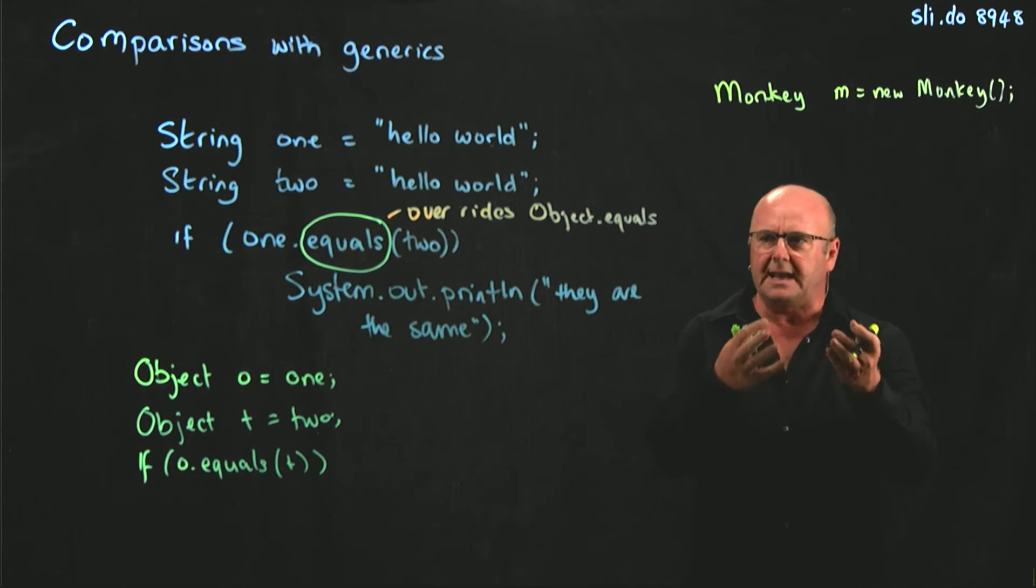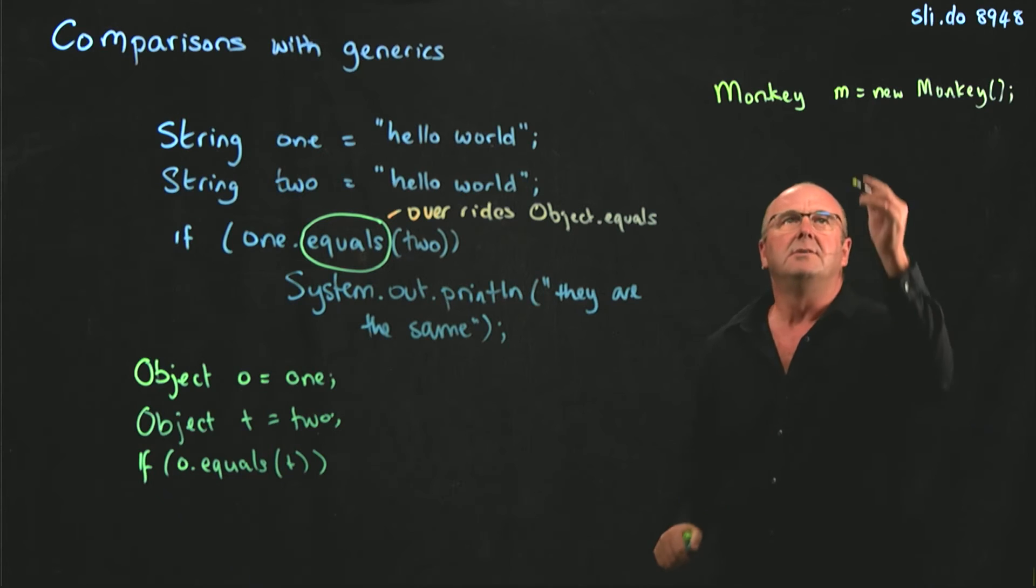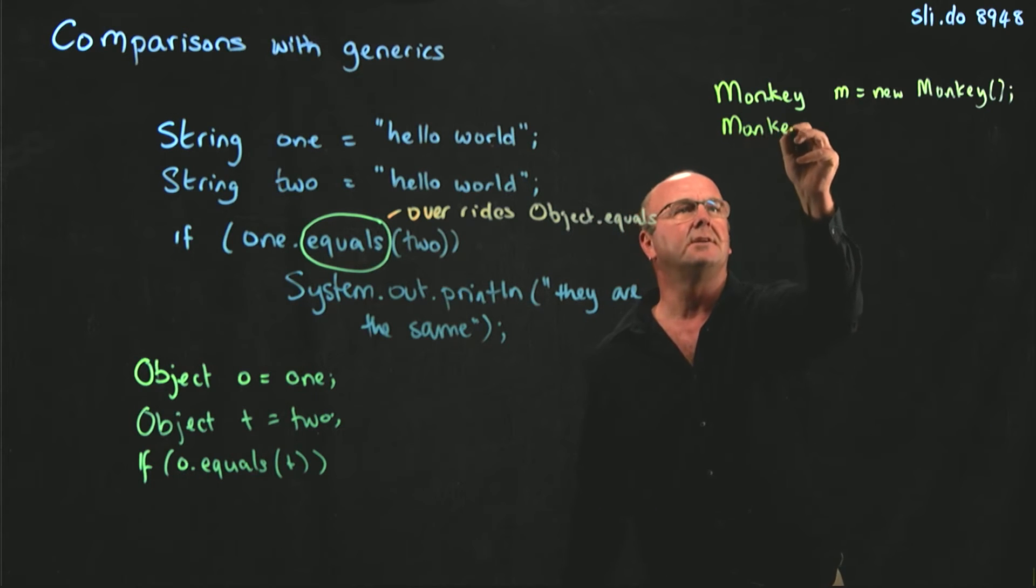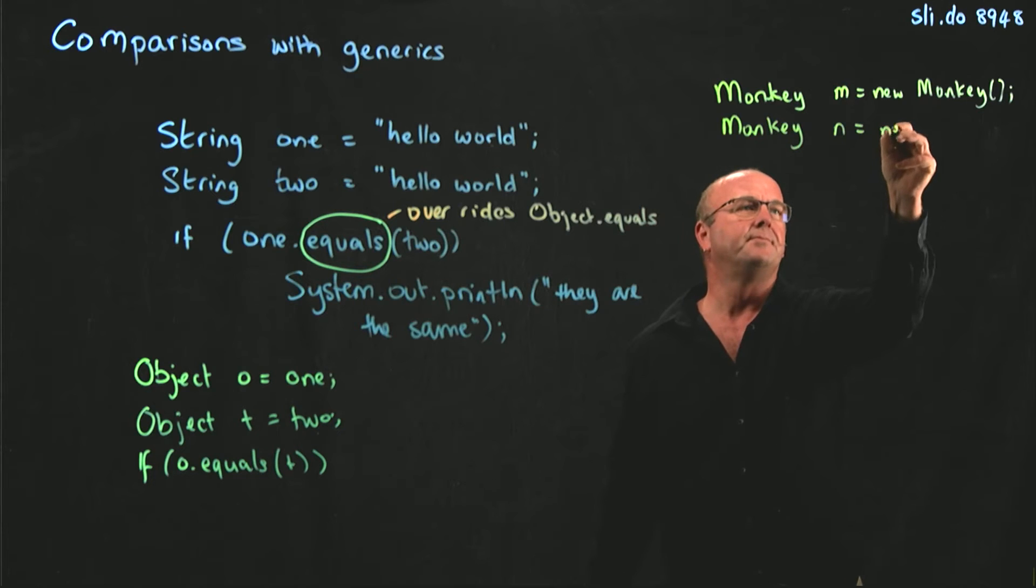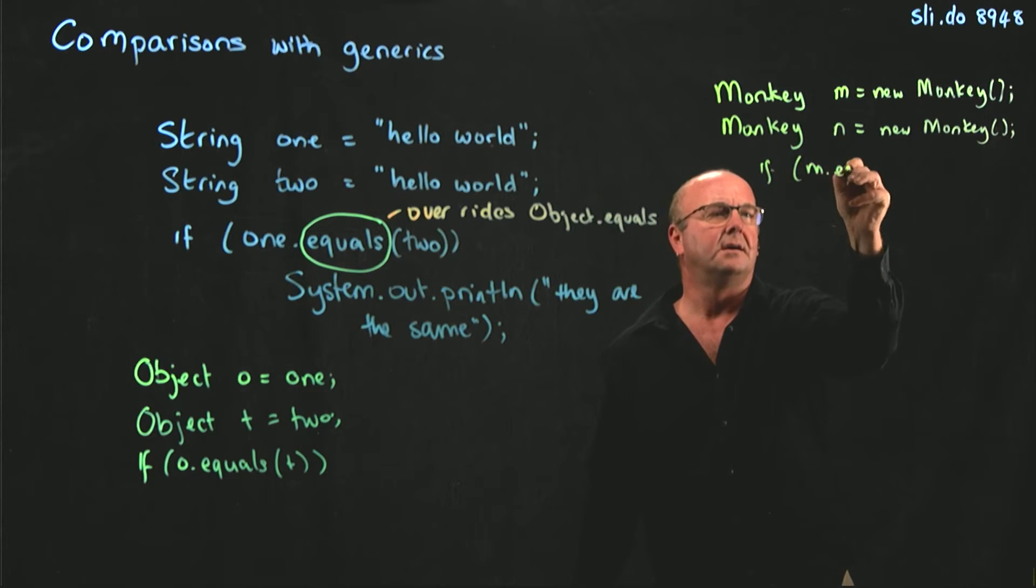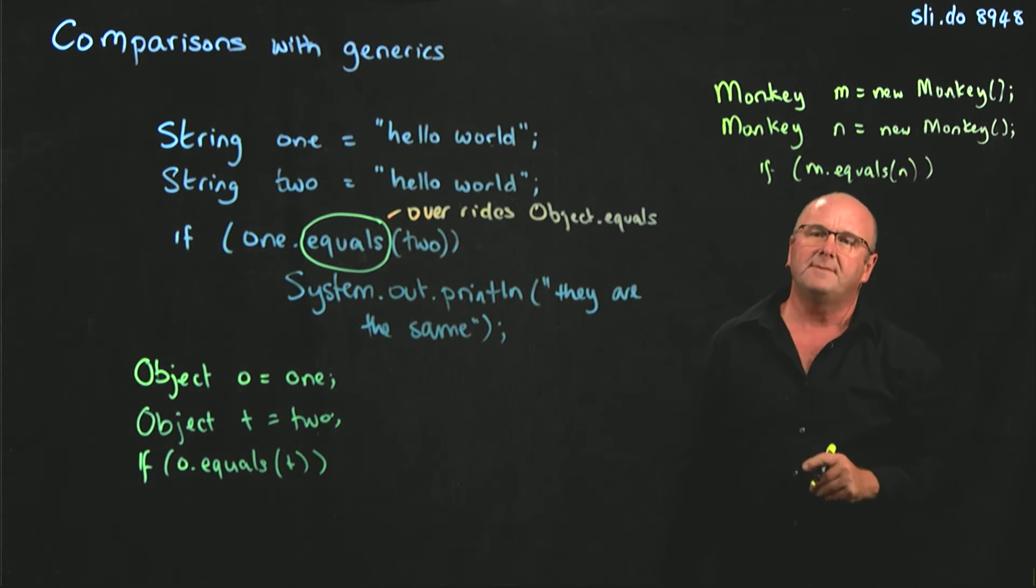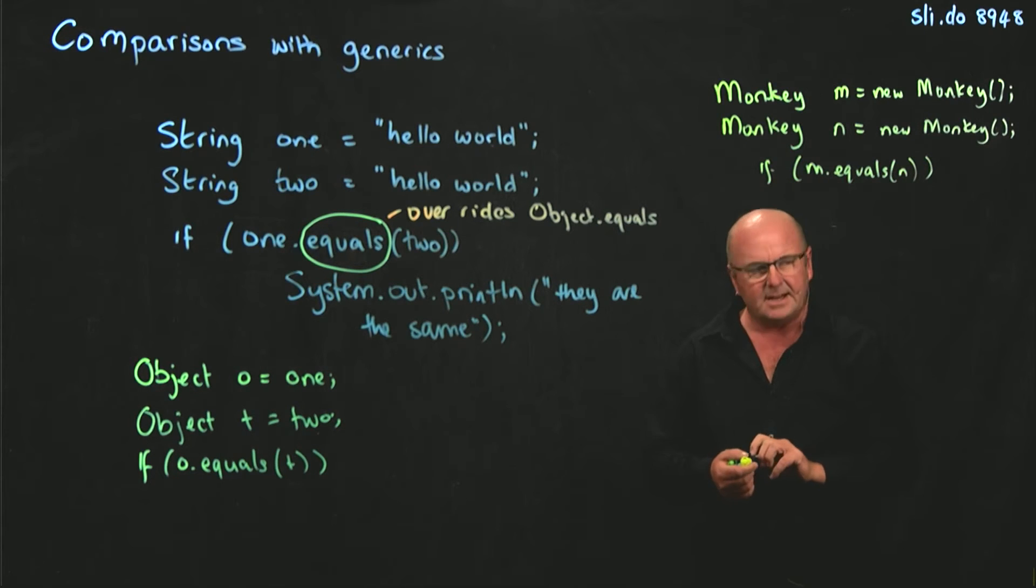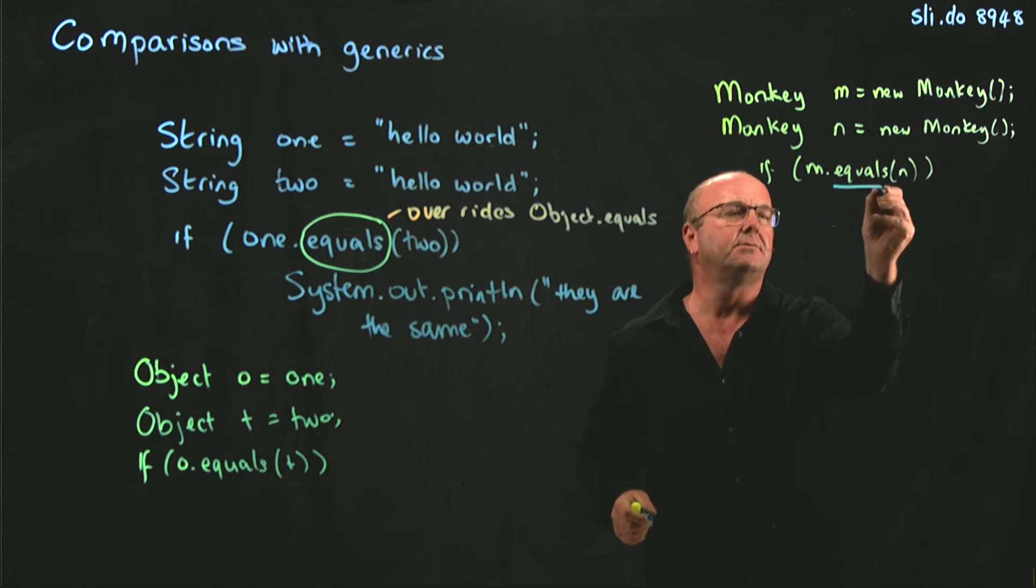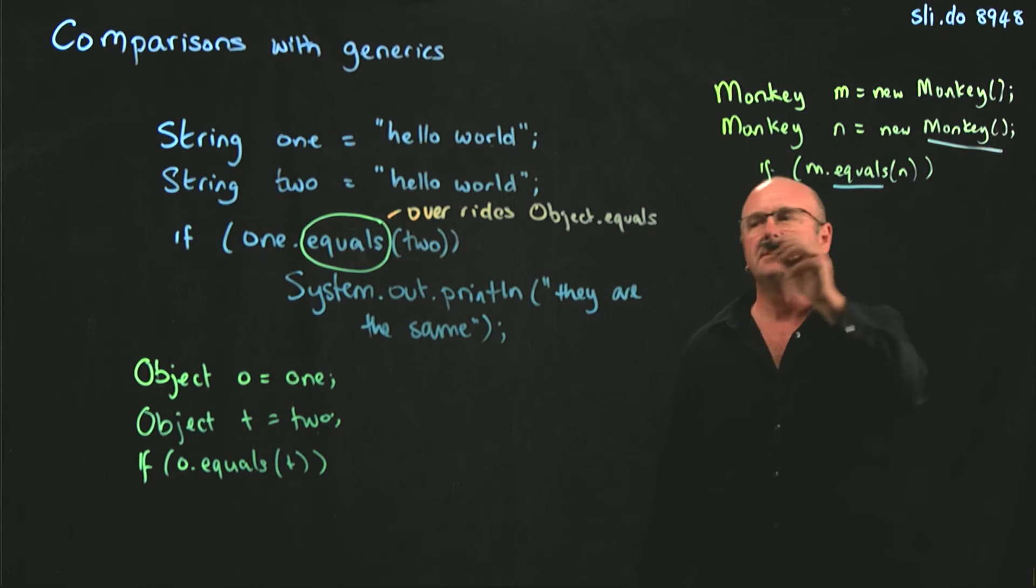Now, if we're allowing them to use our data structure, and we want to know whether we've got two different monkeys, and we want to know if they're equal, the same way. We have no way of knowing because we're writing the data structure. We have no way of knowing whether this equals class is in the monkey class or is in the object class.